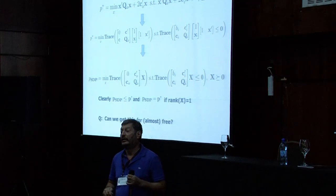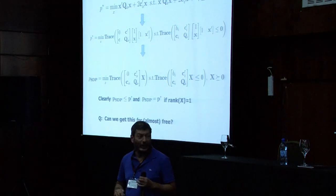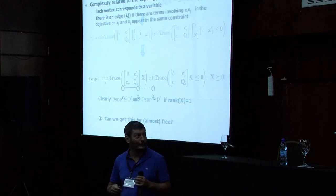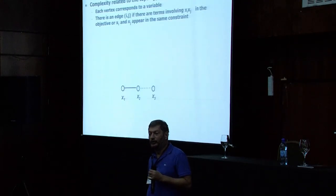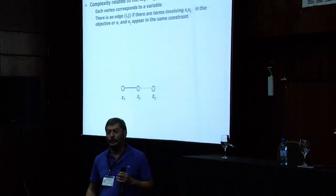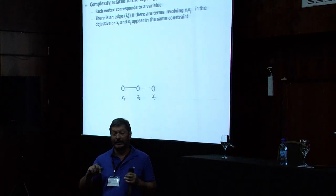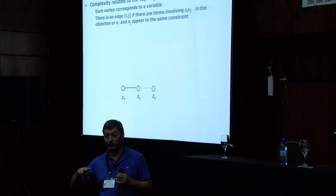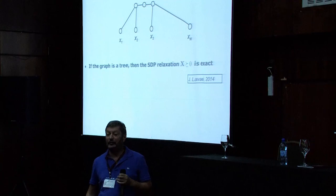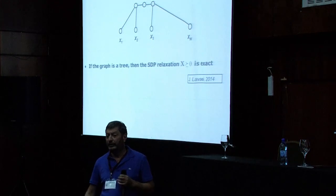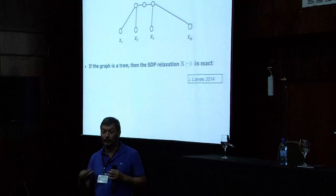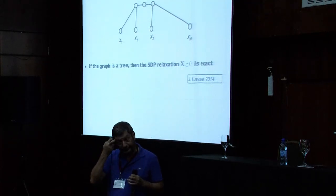The question is: can I get this for free? What if I drop the rank constraint — do I still get the optimal solution? Surprisingly, the answer is yes, in some cases. This is related to the structure of the problem. The actual answer is related to the topology of a graph called the correlative sparsity graph. You have one node per variable, and you have an edge joining two variables if there's a cross term in the objective or if the two variables appear in the same constraint. It turns out that if the graph is a tree, you can actually show that you get the rank-one constraint for free.